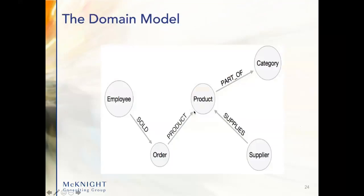Now let me talk about graph modeling. We model at the domain level — we need to know what some of the vertices and edges are going to be. An employee might sell an order, an order might have a product, a supplier might supply that product, and that product is part of a category. This domain-level model is the level of modeling you want to do before getting into your graph database application. The employee, product, supplier, order, and category are going to be the vertices — and the edges will be things like sold, product ordered, supplied, or part of.